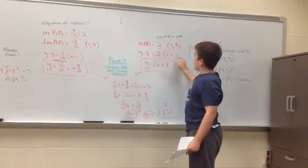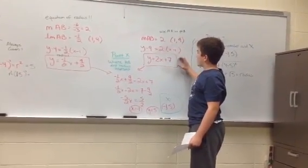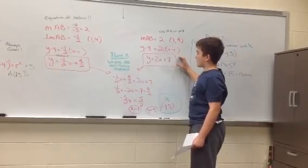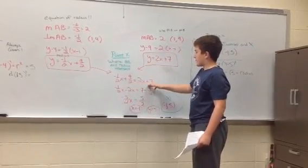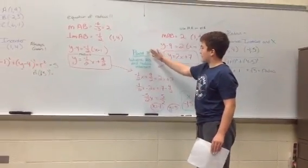So now you will have your point-slope equation, and you'll convert it to a slope-intercept equation. Now you will be using a system of equations to solve, to find the point X.